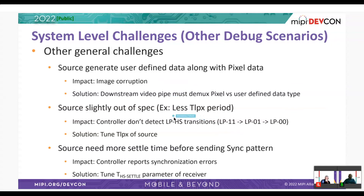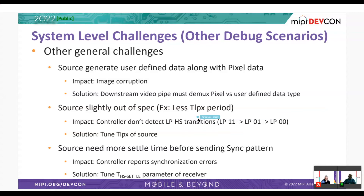The second additional case is the LP to HS transition. When transitioning from LP to HS, there is a particular sequence: LP11, LP01, LP00. In this case, we were not able to detect the LP to HS transition — the controller was always in the stop state. Debug tells us that the duration of TLPX is not sufficient, or not as per the specification based on the current settings of the sensor. Increasing the TLPX of the source resolved the LP to HS detection, and we were able to progress.